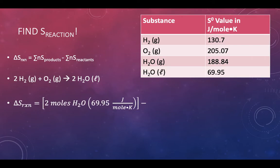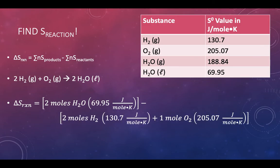So if we're going to do the sum of the products minus the sum of the reactants, we have two moles worth of liquid water. So two times that 69.95 joules per mole Kelvin. That's our only product. Now we're going to subtract from that the sum of our reactants. So we have our two moles worth of hydrogen gas with an S value of 130.7, and one mole of oxygen gas with a value of 205.07. We find the difference between those two, and we get a number of negative 326.57.